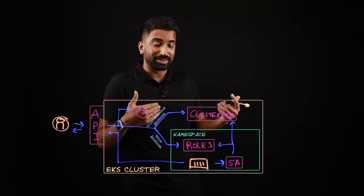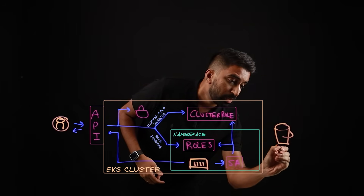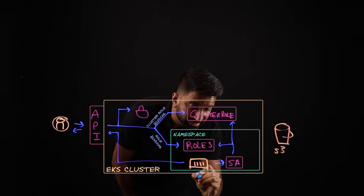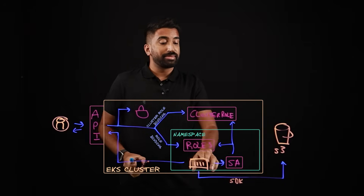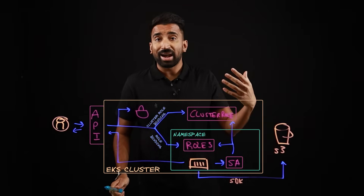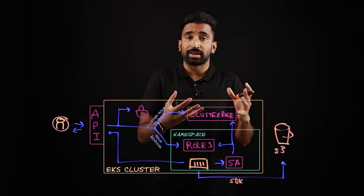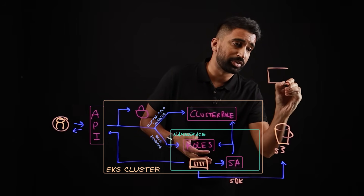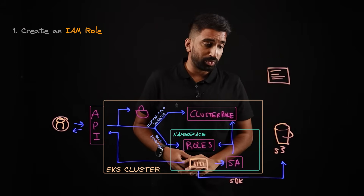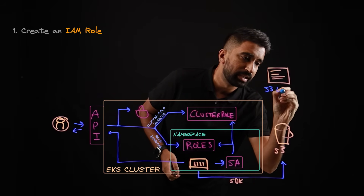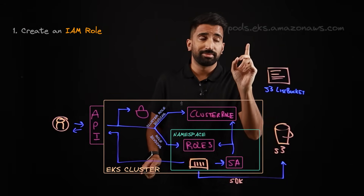Now we can talk about how EKS pod identity fits into the puzzle. Let's say that in AWS we have an S3 bucket, and we want to access that S3 bucket using an approved AWS SDK. This request is going to fail because we haven't created an IAM role and connected it up to this pod just yet. An IAM role essentially gives us permissions to access this S3 bucket, so that's what we'll have to create first with pod identity. In IAM — identity and access management — we create this role and give it something like S3 list bucket. This IAM role has to set a principal, as shown here.